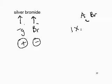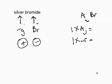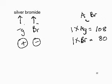For the RMM: 1 × silver (atomic mass 108) and 1 × bromine (atomic mass 80). I'm not certain of those values, so check them and then simply add the two together.